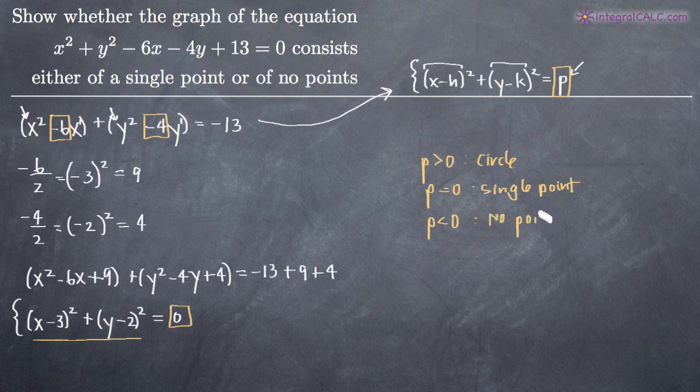In this case, p is equal to 0. Our right hand side is equal to 0. So that means that the graph of this equation consists of one single point. The graph is literally just one point.